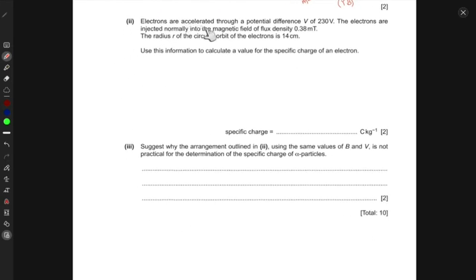Next part says electrons are accelerated through a potential difference of 230 volts. The electrons are injected normally into the magnetic flux density 0.38 millitesla. Normally means they're injected perpendicular to the magnetic field. The radius r of the circular orbit is given as 14 centimeters. Use this information to compute the value of the specific charge of the electron.